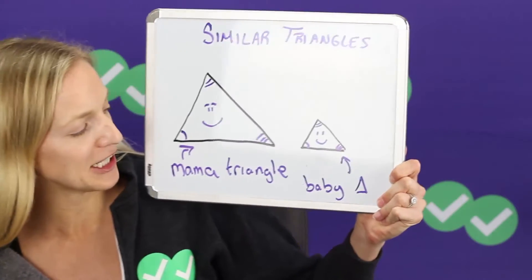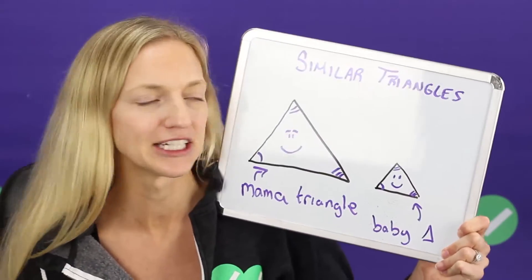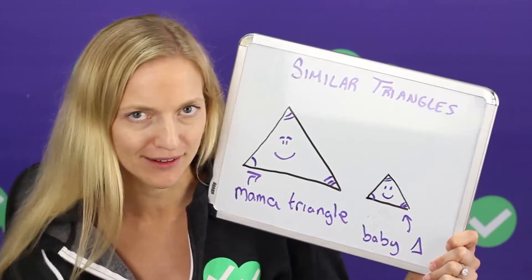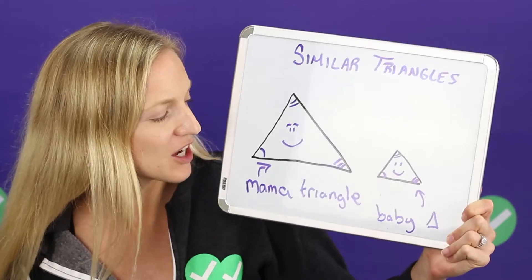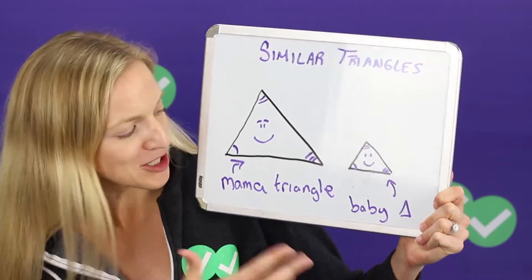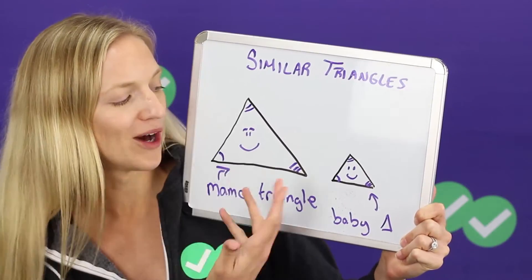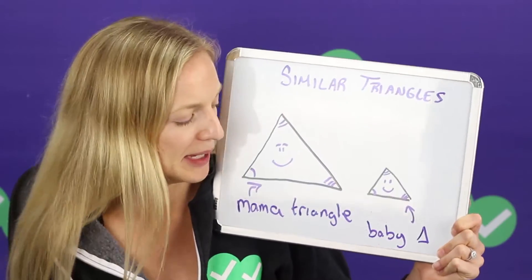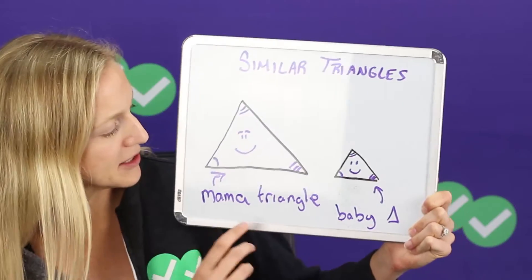So let's go ahead and review what similar triangles are. I like to think of them as mama triangles and baby triangles. It's a little silly but it can help you visualize what similar triangles are, make it a little bit more visual. I like to think of them as mama triangles and baby triangles because one is bigger and one is smaller but they look the same, just like a mom and a baby might, or in this case triangles.